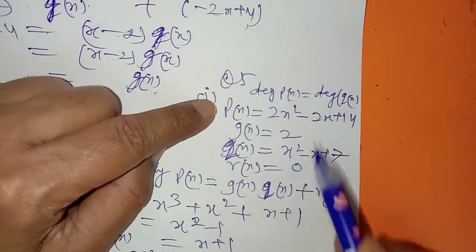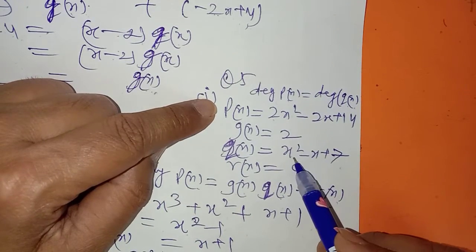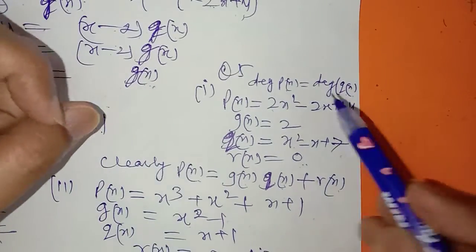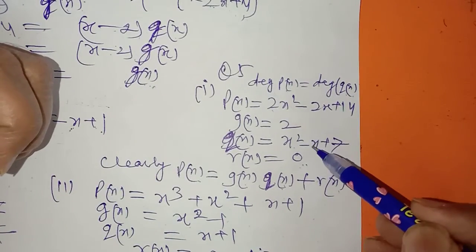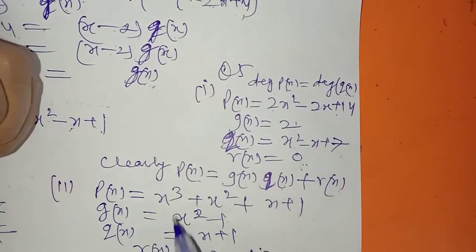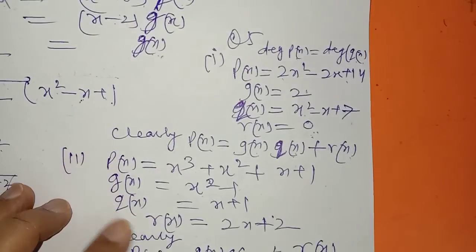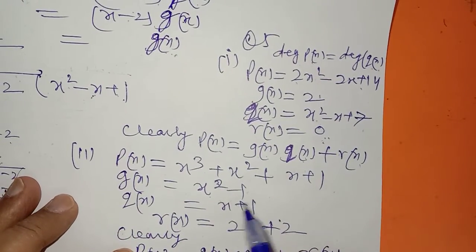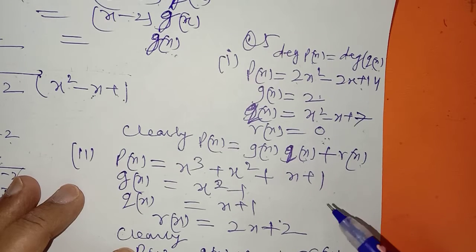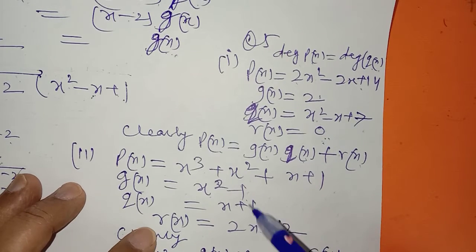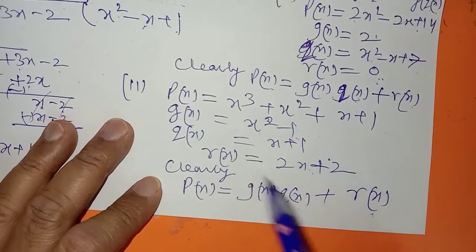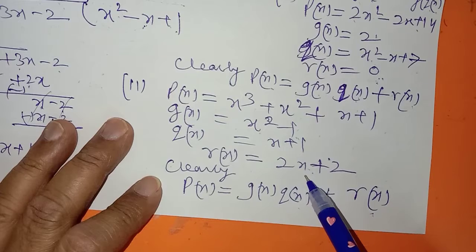تو میں نے ایک example لے لیا جس میں dividend اور quotient کی degree میں نے x square لے لی۔ gx میں remainder 0 لے لیا۔ In the second part, the degree of q(x) and r(x) should be same, and dividend is equal to divisor into quotient plus remainder satisfy ہونا چاہیے۔